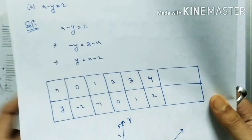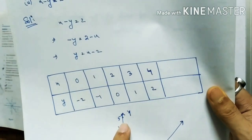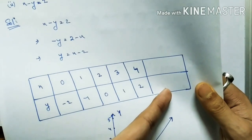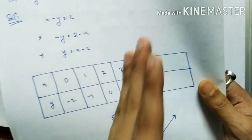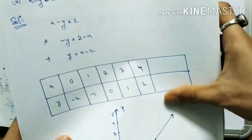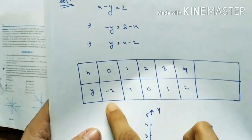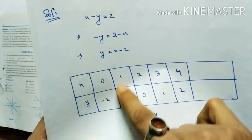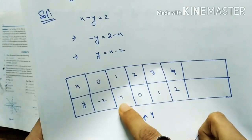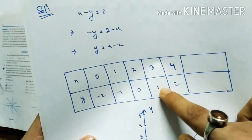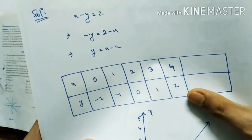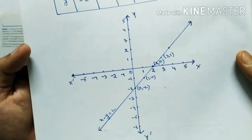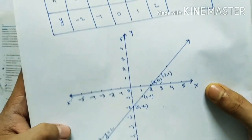Draw the table of values for y equals x minus 2. If x equals 0, y equals minus 2. If x equals 1, y equals minus 1. If x equals 2, y equals 0. If x equals 3, y equals 1. If x equals 4, y equals 2. Similarly, draw the graph of this equation.